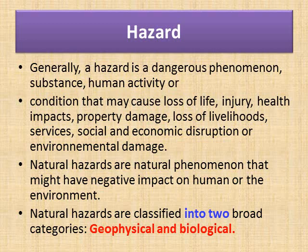Natural hazards are natural phenomena that might have a negative impact on humans or the environment. When you see a hazard that is a natural one, it has a negative impact on humans or even the environment, occurring naturally — it could be a biological or geophysical phenomenon. Natural hazards are classified into two broad categories: geophysical and biological.